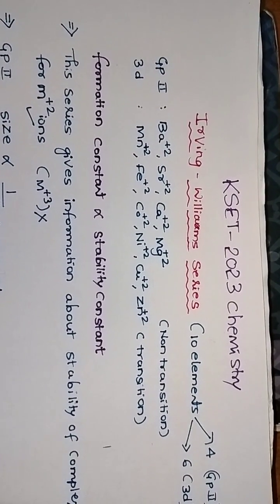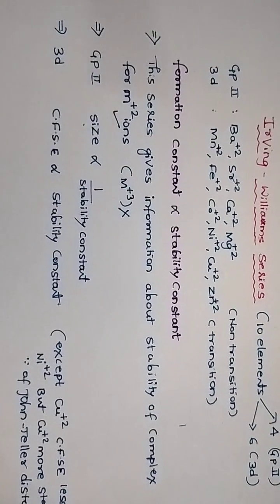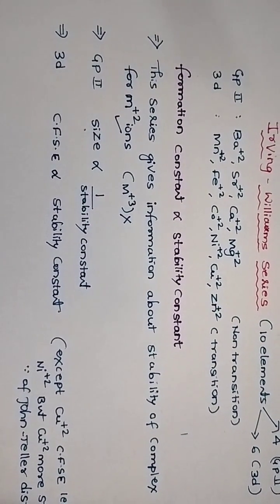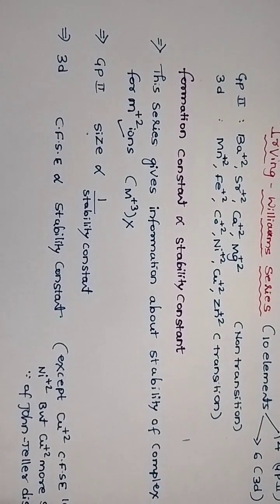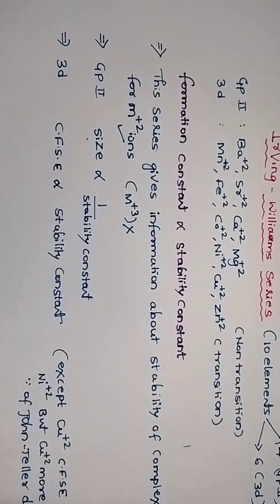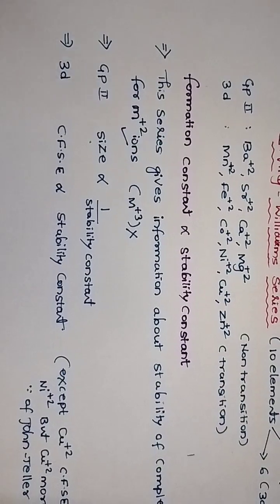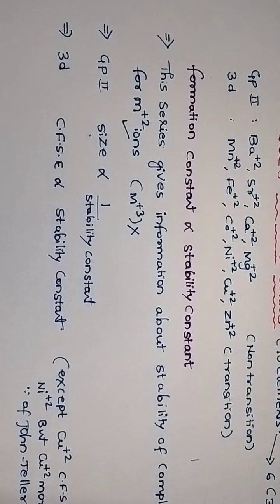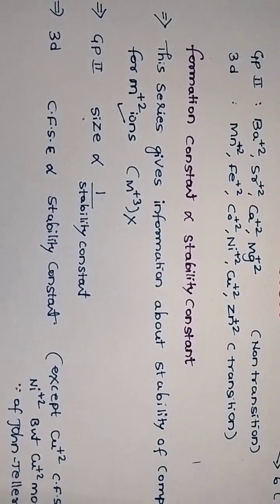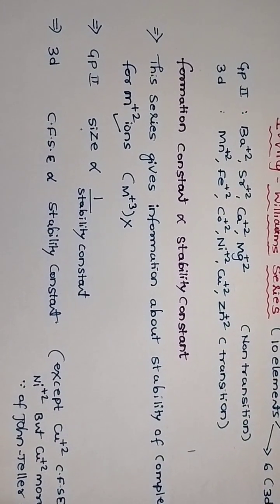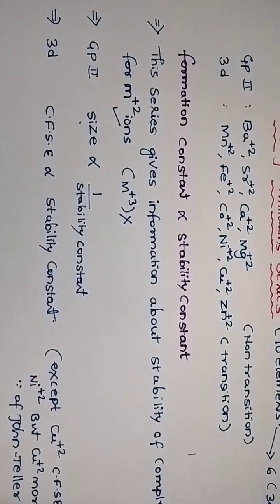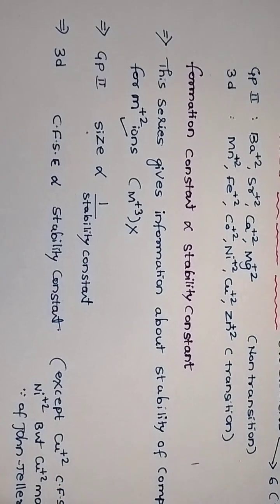First, I'll simply tell you in theory: formation constant and stability constant are both directly proportional. You have to understand the Irving-Williams series is mainly for octahedral high-spin complexes where the metal should be divalent and all ligands attached to the metal are always the same. For that case, this theory works.